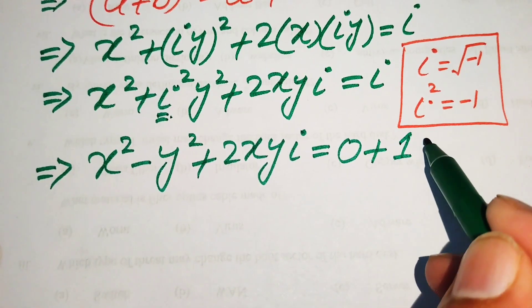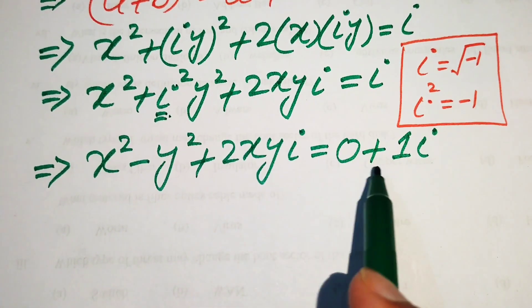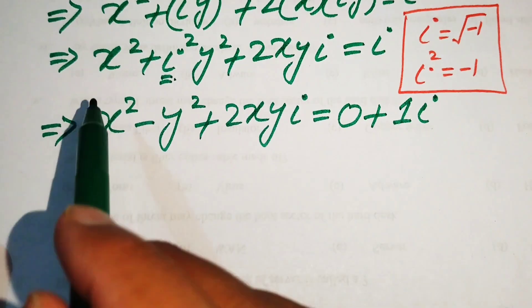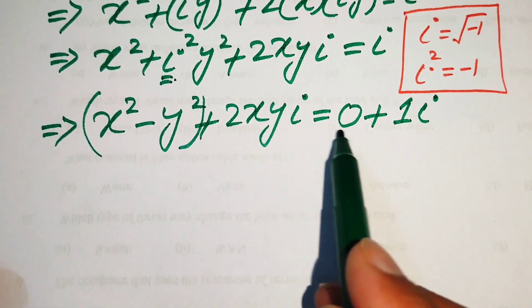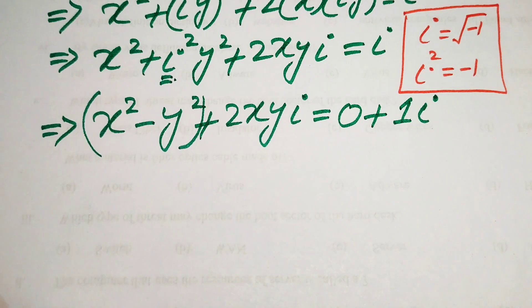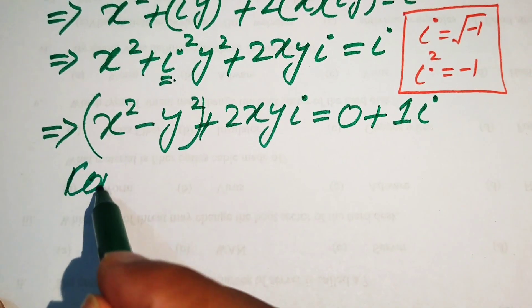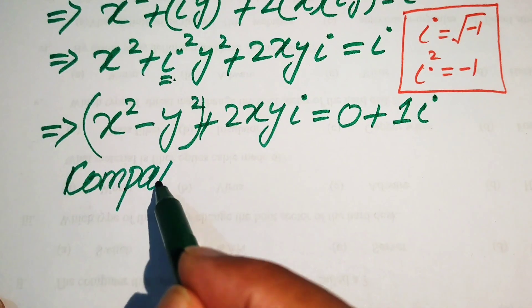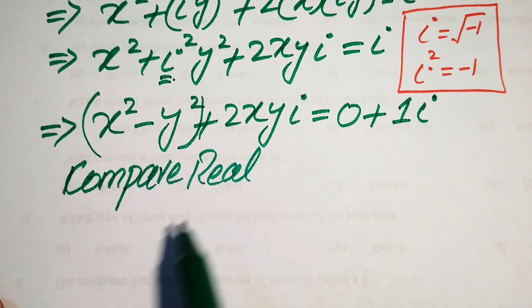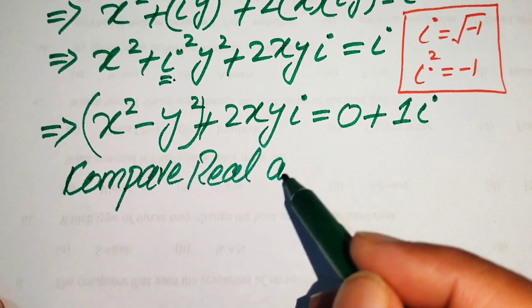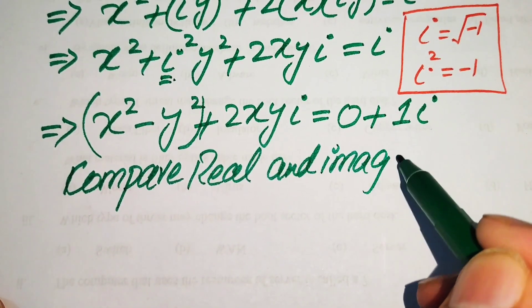The right-hand side iota is rewritten as zero plus one multiplied by iota. Now we compare the real and imaginary parts on both sides.